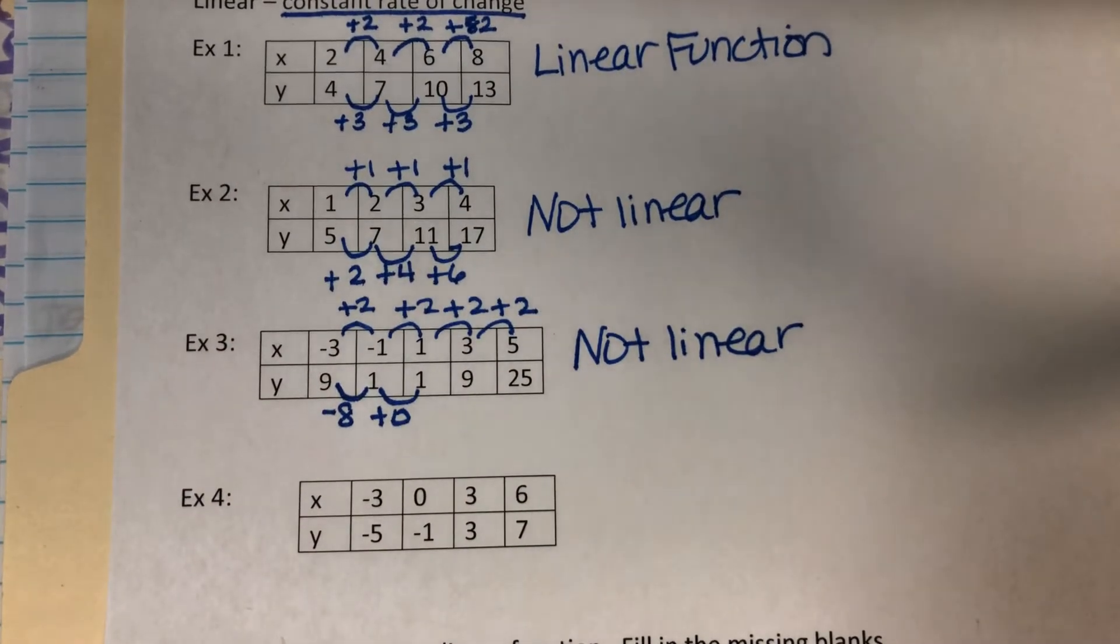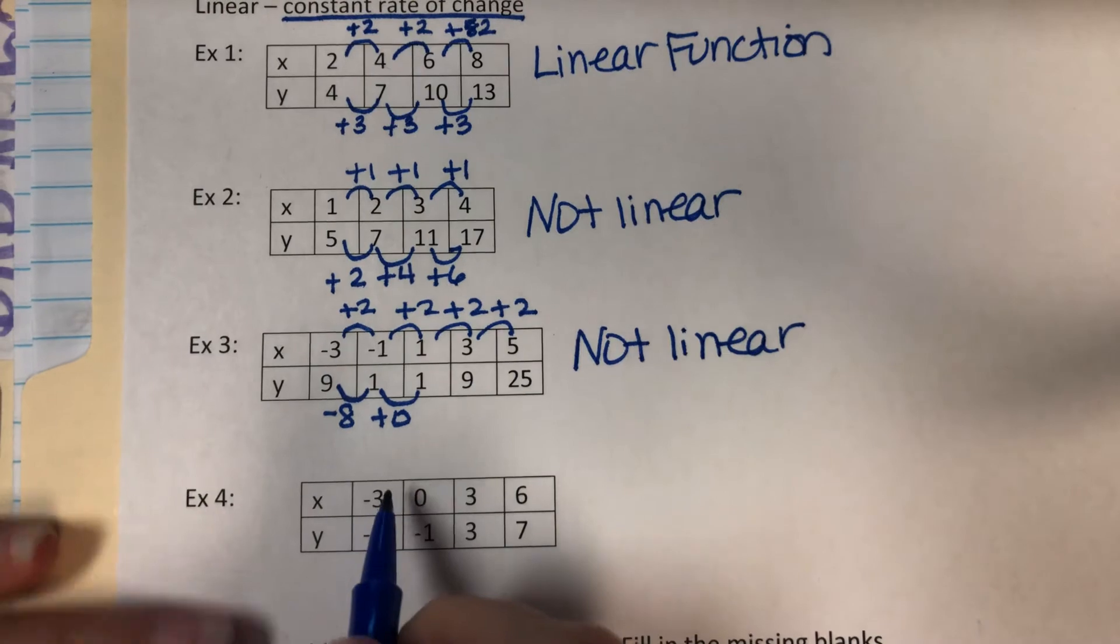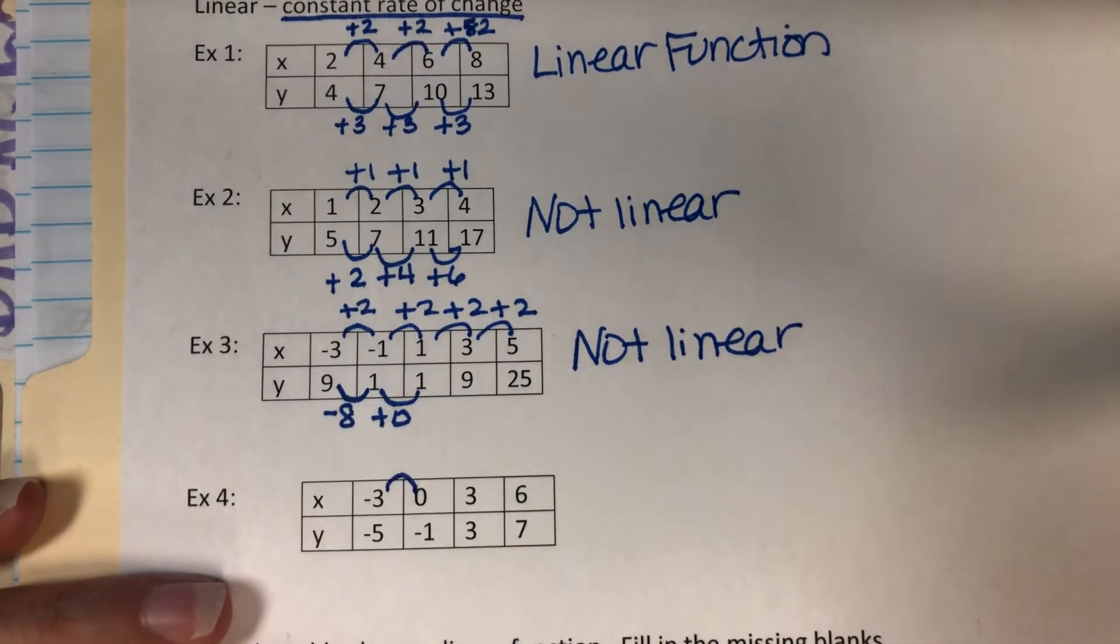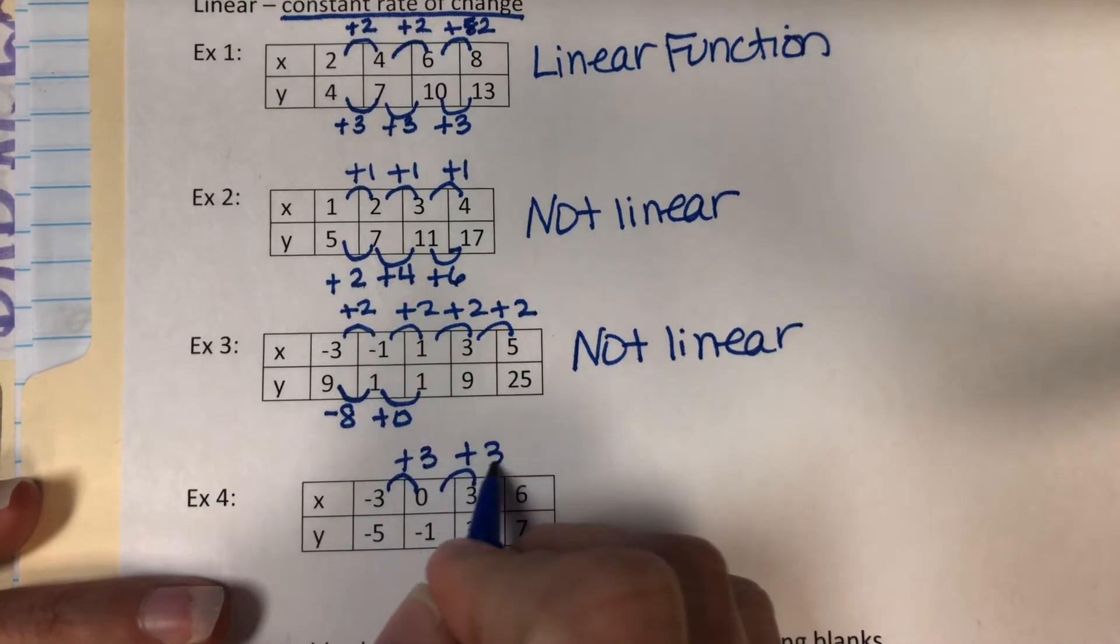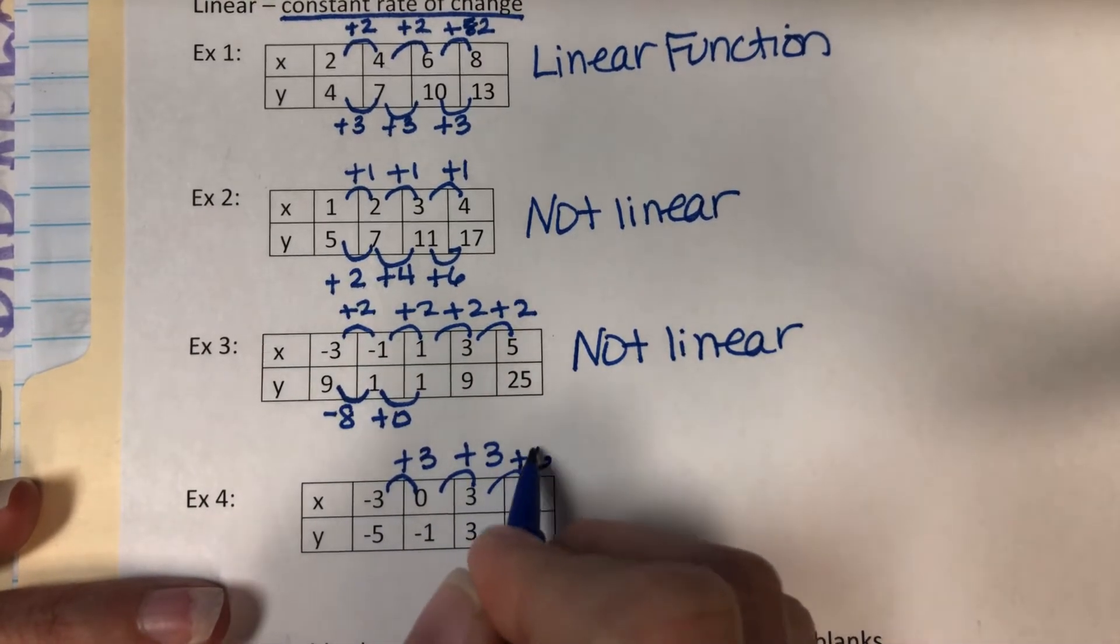Let's look at number 4. Negative 3 to 0, you add 3. 0 to 3, you add 3. 3 to 6, you add 3.